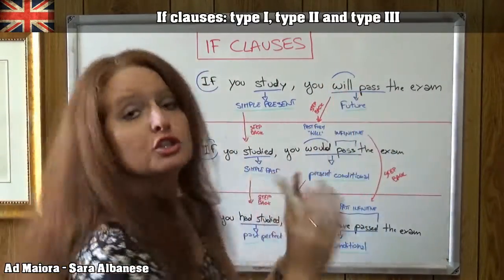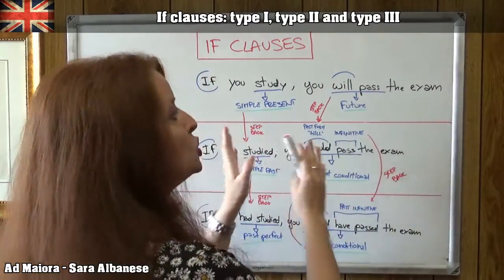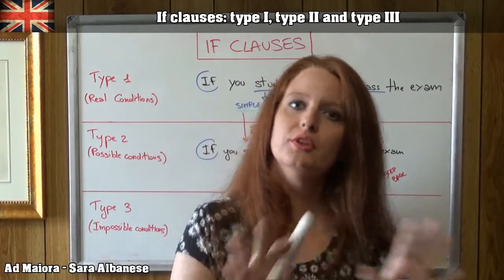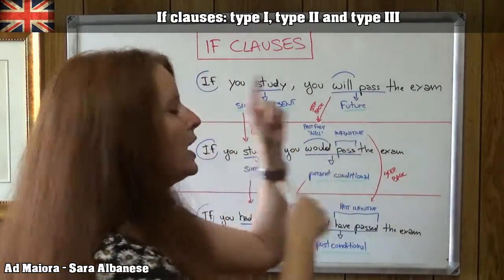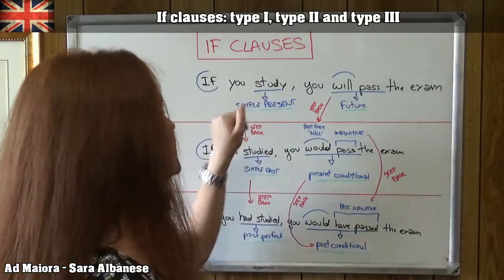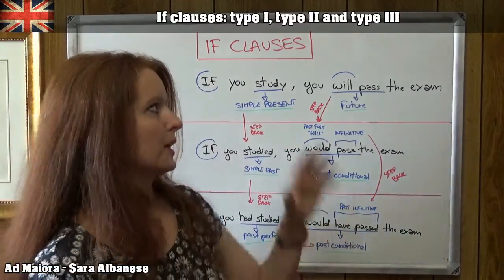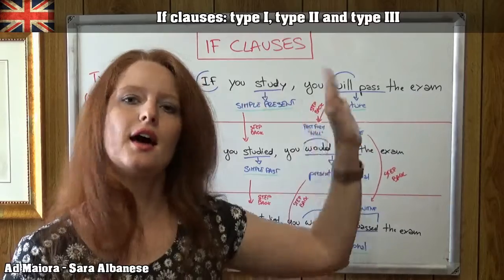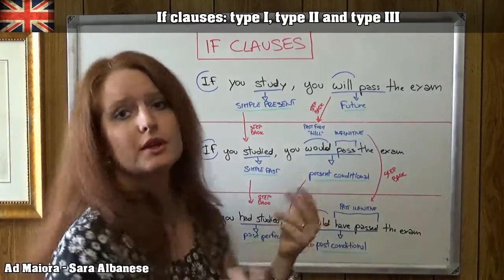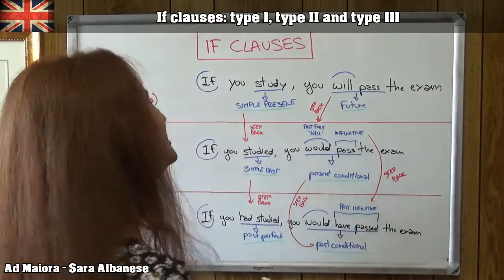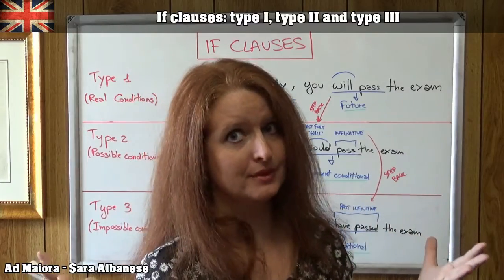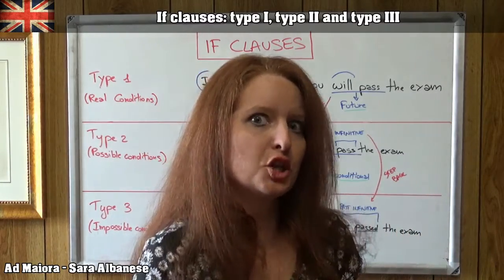We can also switch the two clauses. We can say 'You will pass the exam if you study.' It doesn't really matter whether you put them this way or the other way around, because the IF clause will always have a simple present and the main clause will always have a future with WILL. So, when we shift to Type 2 — possible conditions — something that may happen but isn't so sure.